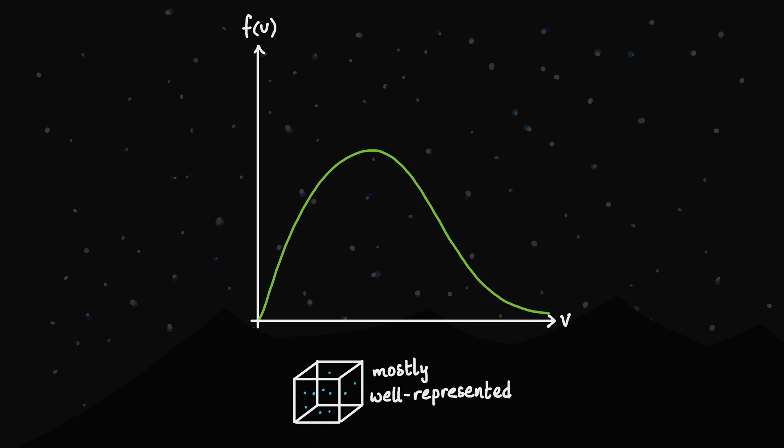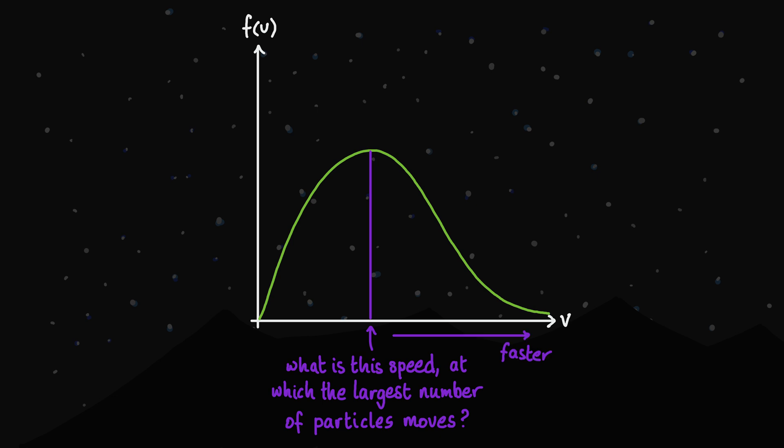And I reckon what we're looking for is the actual value of the modal speed, the speed at which we're likely to find the most number of particles moving. Because as we've seen, there are always going to be some particles moving much faster, but most particles will be moving at around this speed. So what is this value?